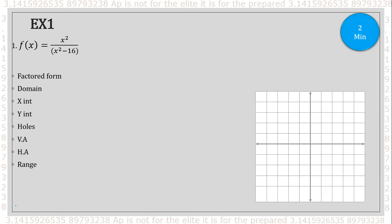Let's do some examples. Not all the time will they be factored out for you. I have x squared over x squared minus 16 — the denominator is not factored yet. X squared minus 16 is a difference of squares, so it factors to x plus four times x minus four. Now we have our factored form to work with.